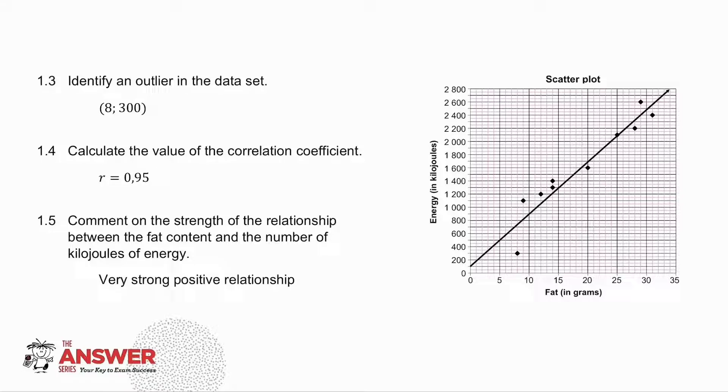1.3 asks me to identify an outlier in the data set. So you've drawn the equation of the line, so you've got to look for a point that is far away from the line, and the point that is the furthest away from the line is that point. So it's the coordinate 8, 300.